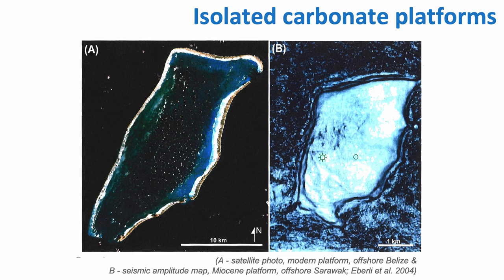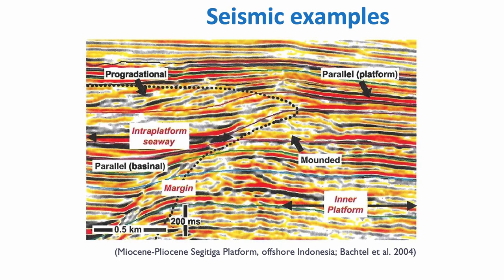Now I'd like to spend a bit of time showing you seismic examples of isolated platforms. This is an example from the Miocene to Pliocene Segediga platform offshore Indonesia. I want to draw your attention to how we can use the margin — the reef track here — which is characterized on this seismic line by chaotic reflectors. You can very clearly see those chaotic reflectors. On the left you have parallel reflectors representing basinal deposits, and on the right you have chaotic to parallel reflectors representing the inner platform.